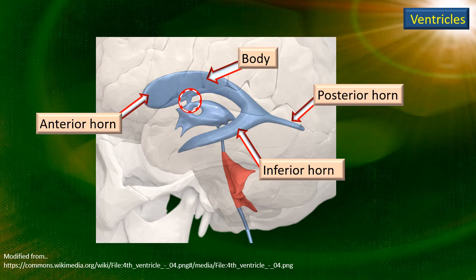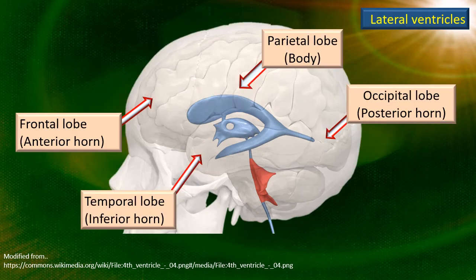Let's map these parts of the lateral ventricle with corresponding regions of the cerebrum. The body is essentially confined to the parietal lobe. The anterior horn of the lateral ventricle projects into the frontal lobe. The posterior horn projects into the occipital lobe, and finally the inferior horn goes into the temporal lobe. That's why the lateral ventricle is C-shaped.